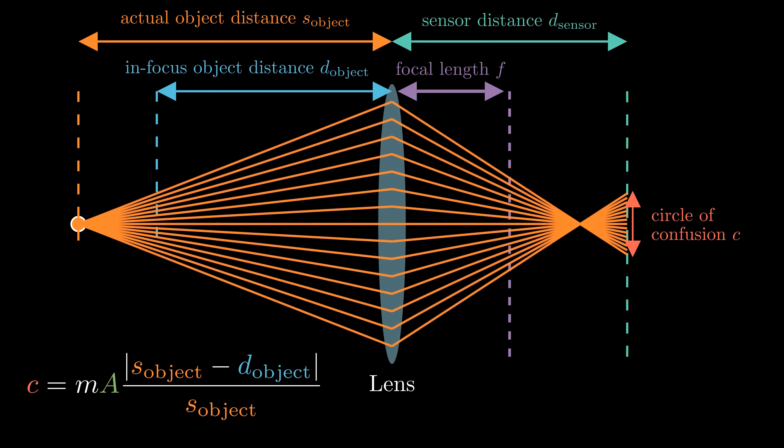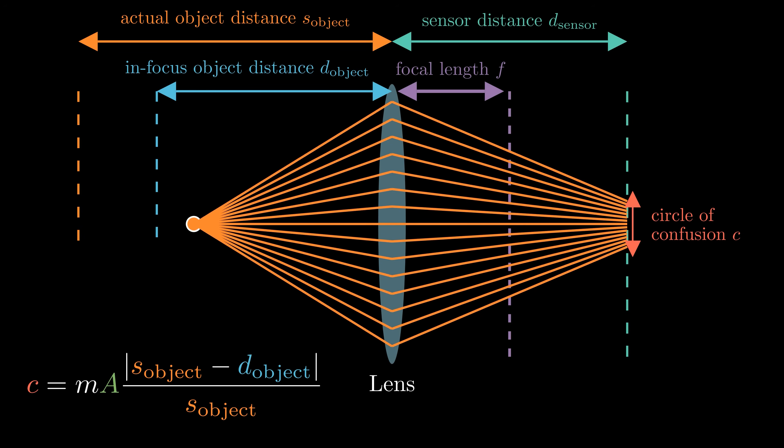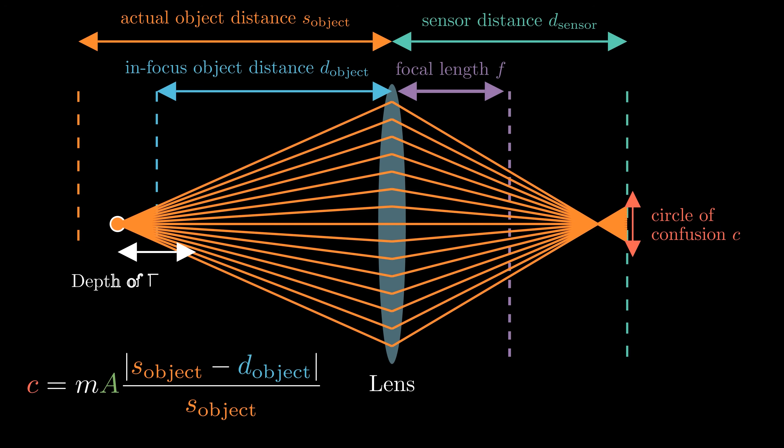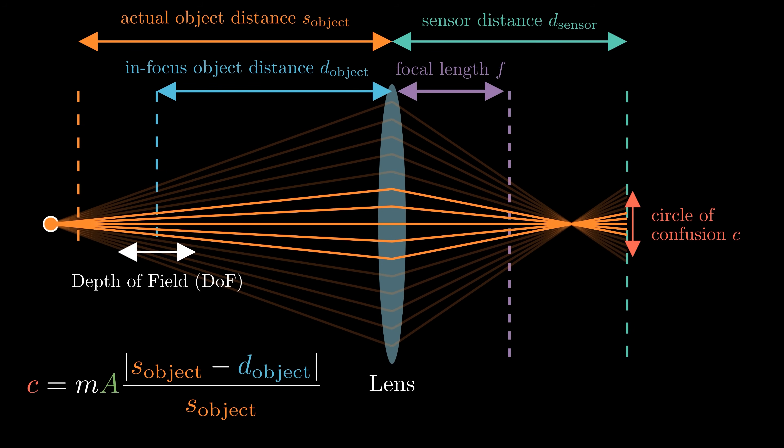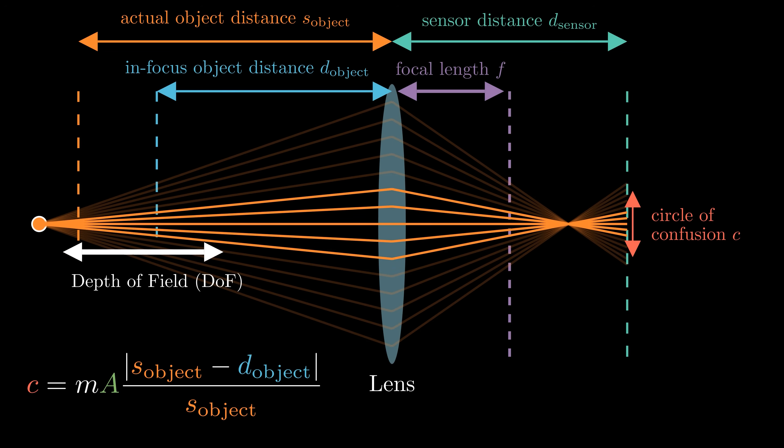Moving the point back and forth, we can see the range where the circle of confusion remains sufficiently small. This leads to the concept of depth of field. It's the range of object distance over which the image appears sufficiently sharp. We can expand the depth of field by decreasing the size of the aperture. This reduces the amount of light reaching the sensor but increases the range of distance that appears sharp.